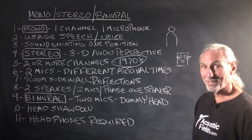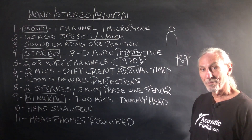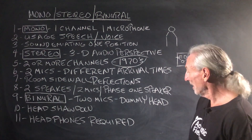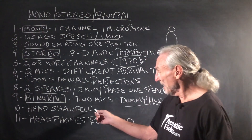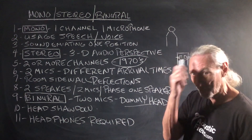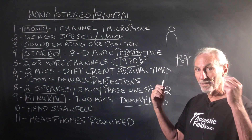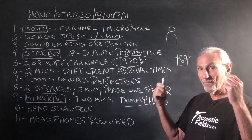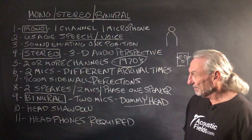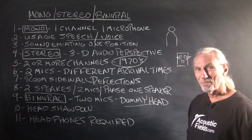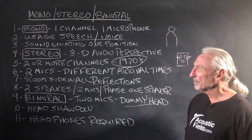Binaural — that's that dummy head with the microphones in the ears. We've all seen those pictures. It's called dummy head, and the technique is called head shadowing, which is the head between the two ears. The microphones go in there and they receive like the ears do, and then you record that. It's mainly for headphones — headphone requirements, the binaural situation.